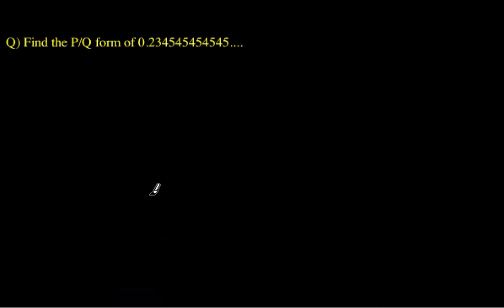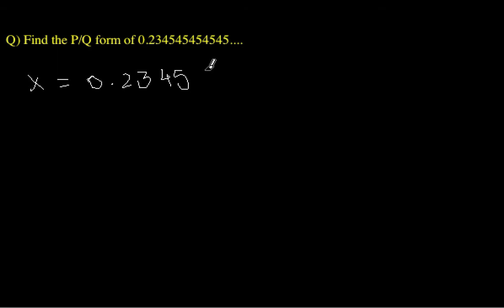Now the final example from this lecture: x = 0.23454545, so basically 45 is the recurring part here. We will write x = 0.23 and the bar only comes above 45, because that is the recurring part.